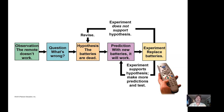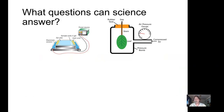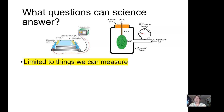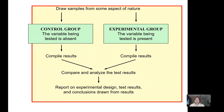An important limit of science: we can only answer questions about things we can measure. For example, 'Do you have a soul?' is a very important question, but not one science can address. Every time we develop new measurement tools, science advances — X-rays allowed us to see inside structures, radioisotopes let us track biological pathways, and satellite imagery enables us to do ecology from space.